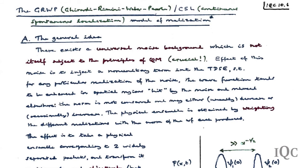The general idea of GRWP: there is a universal noise background that is not itself subject to the principles of quantum mechanics—this is absolutely crucial. If the noise were itself quantum mechanical, everything would be lost. The effect of this noise is to inject a non-unitary term into the time-dependent Schrödinger equation such that for any particular realization of the noise, the wave function is enhanced in the spatial regions the noise hits and reduced elsewhere.